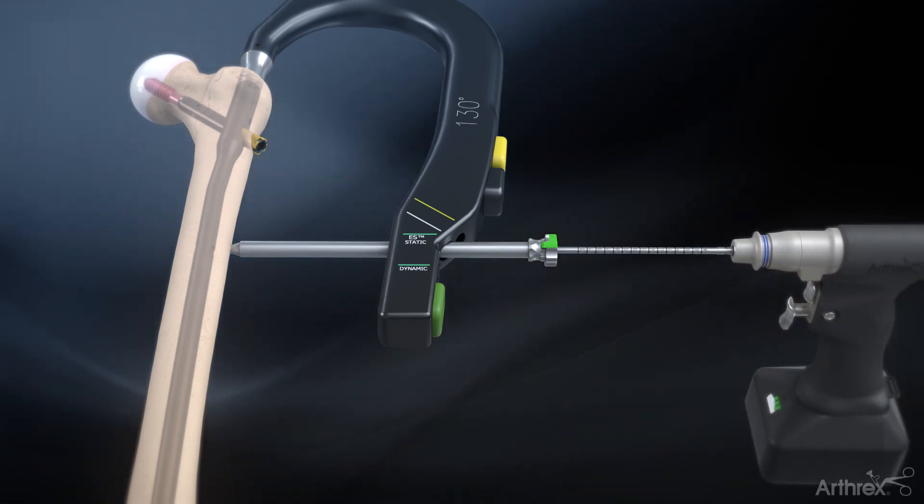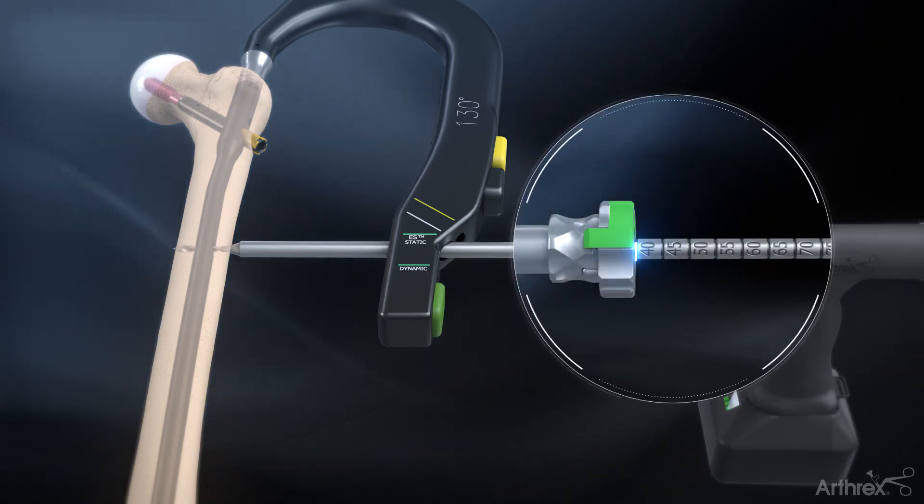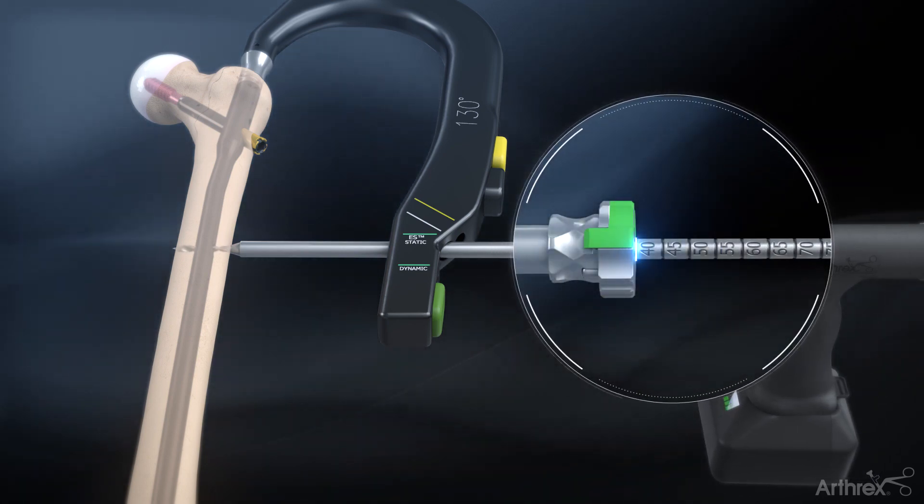Drill bicortically using the 4.0 mm calibrated drill bit. Determine the screw length using the calibrations on the drill bit.